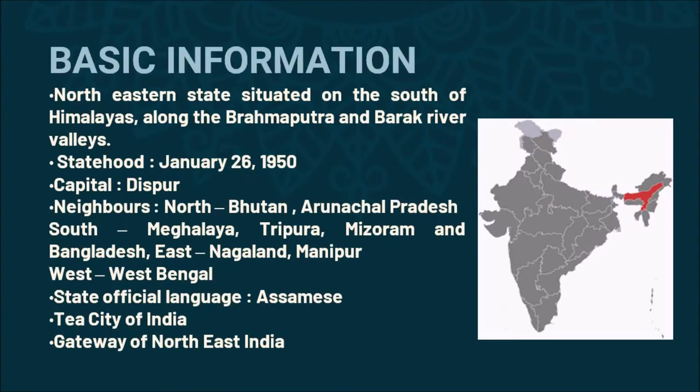Assam is a northeastern state situated on the south of the Himalayas, along the Brahmaputra and Barak Valley. Assam got its statehood on January 26, 1950. Dispur is its capital. The neighbouring countries are Bhutan on the north and Bangladesh on the south.